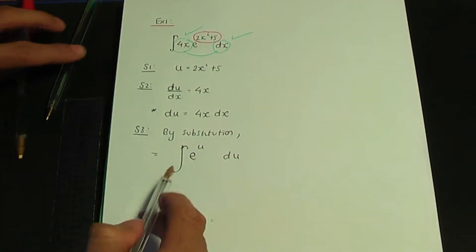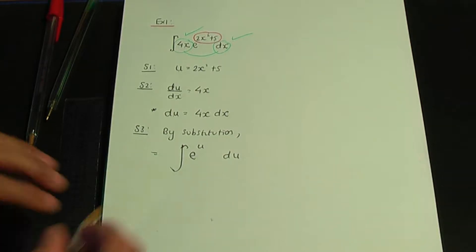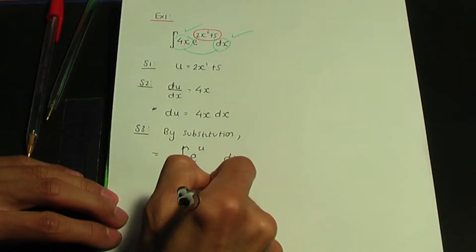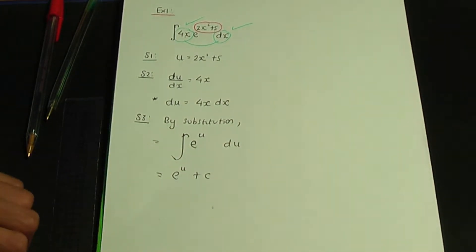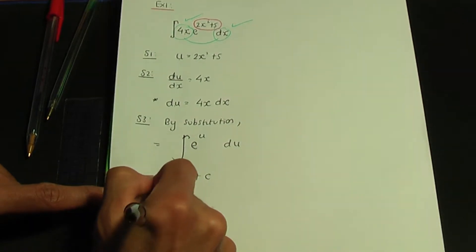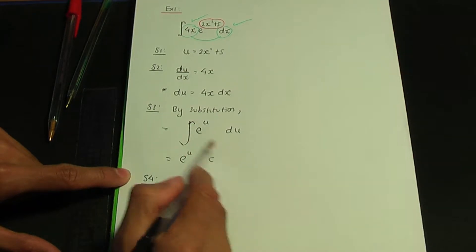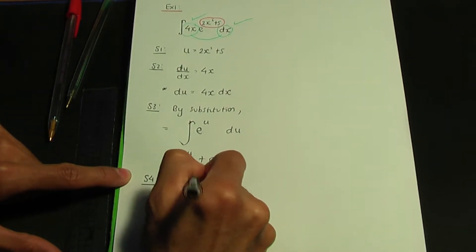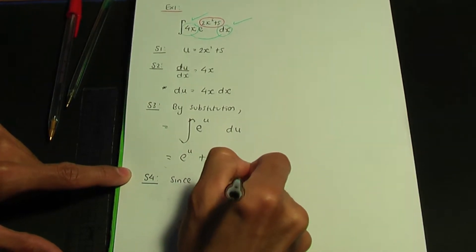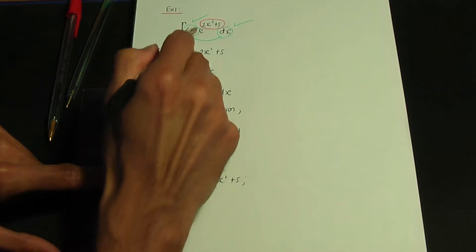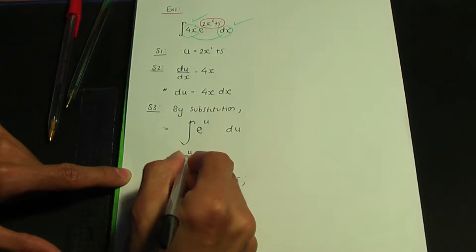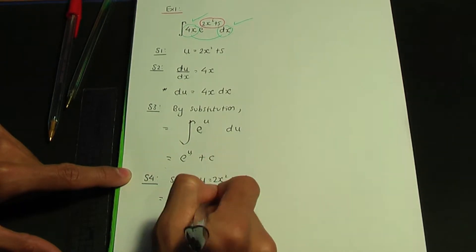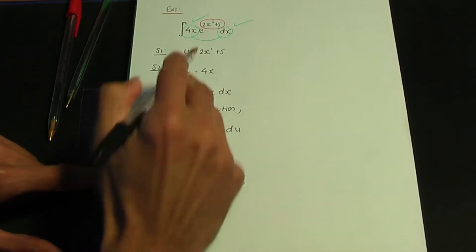So we're going to integrate e to the u now. When we integrate e to the u with respect to u, that's a standard result — you're going to get e to the u plus c, since we don't have any limits on our integral. And in the last step, step number 4, let's write this back in terms of x. Since u is equal to 2x squared plus 5, that means the answer to this integral is e to the power 2x squared plus 5, plus c. That's the final answer.